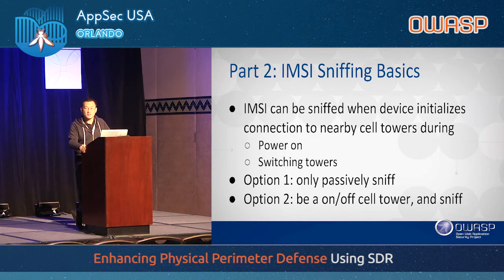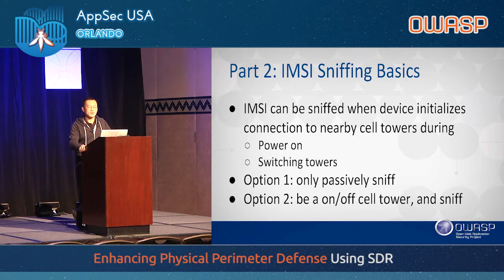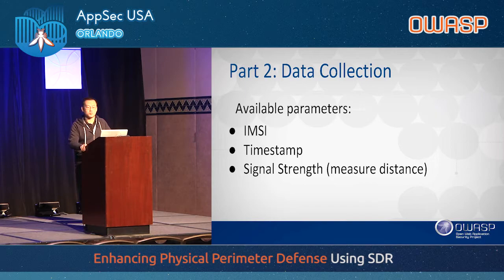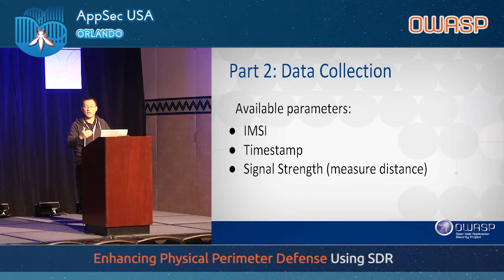There are two ways to sniff IMSI. One is to passively sniff and wait until the device approaches nearby towers. The second option is to act as a tower and sniff the IMSI — apparently more practical for getting all IMSI numbers around you. There are three signals we're collecting: the IMSI information, the timestamp — meaning the actual time the device showed up near your perimeter — and the signal strength, which helps identify the range or distance between your fake tower and the actual device.